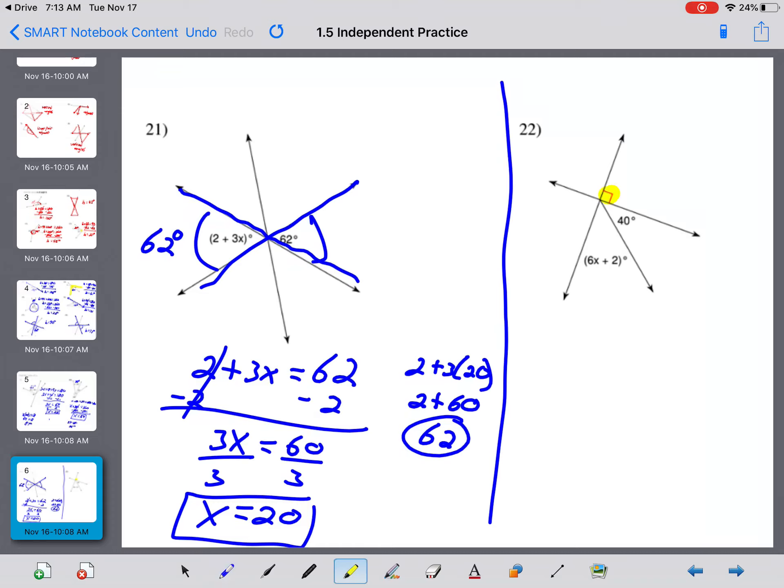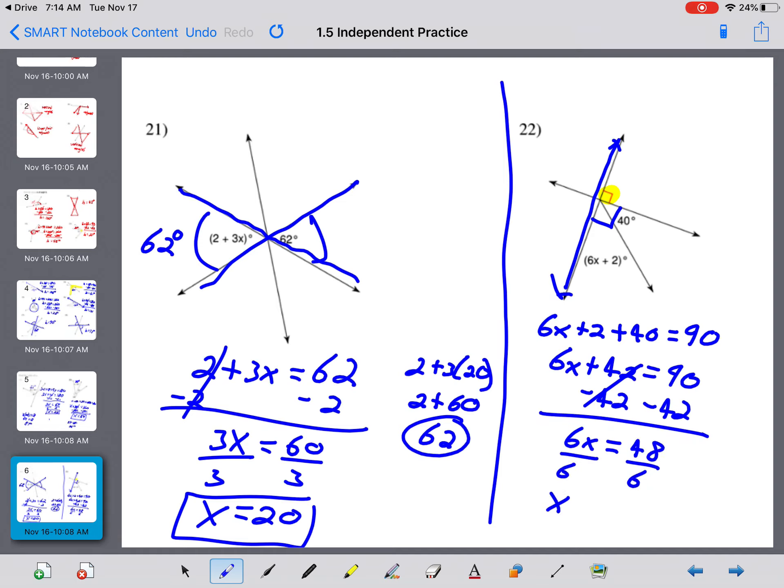Last one. We see 90 degrees right here. We see a straight line, which means that these two angles must add up to 90 degrees. 6x plus 2 plus 40 equals 90. 6x plus 42 equals 90. And subtract by 42 on both sides. 6x equals 90 minus 42 is 48 degrees. Divide by 6. And x equals 48 divided by 6 is 8.